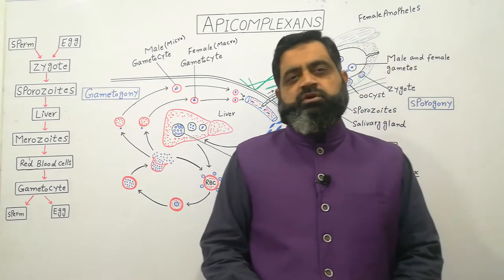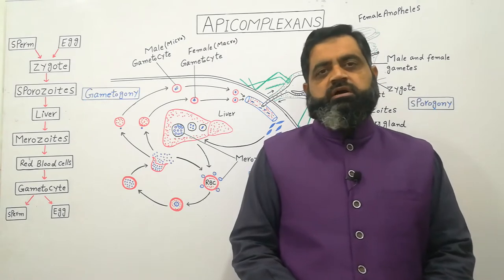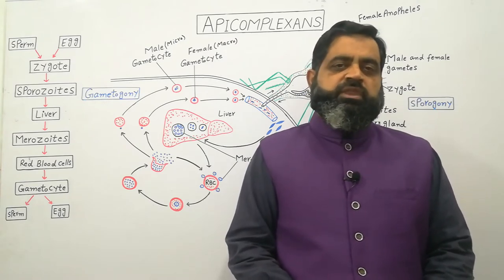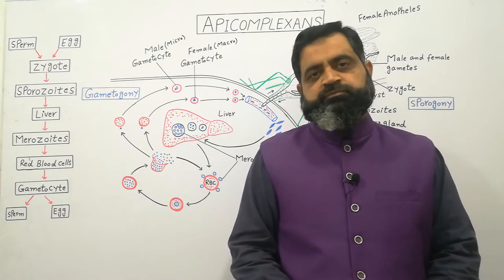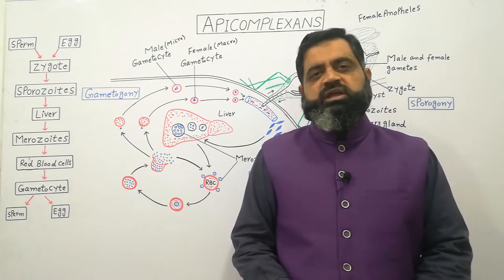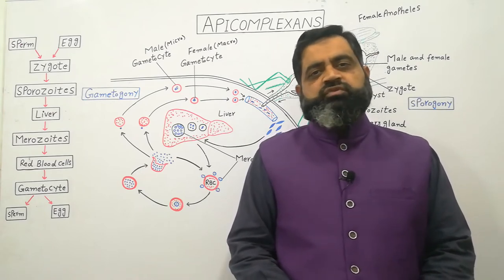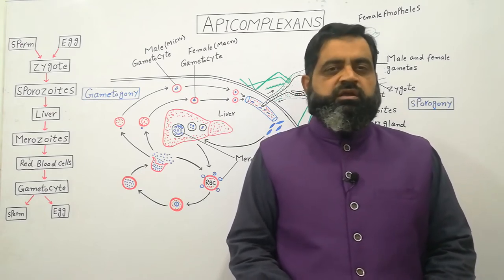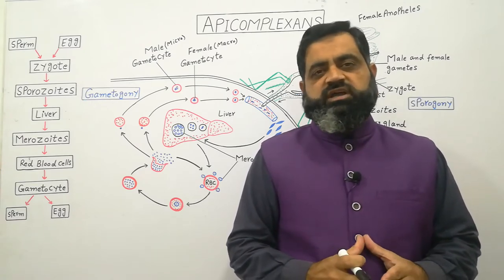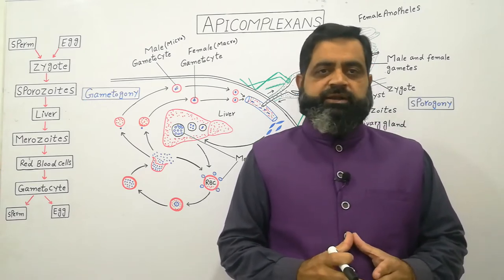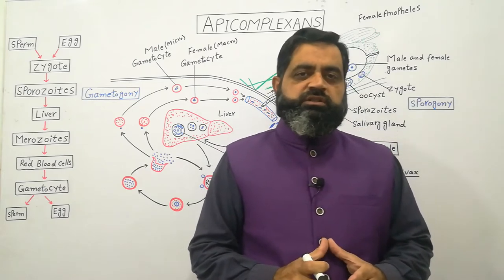Apicomplexa belong to Kingdom Protoctista. They are protozoans and they belong to a group known as Sporosi. Apicomplexa do not have cilia or flagella on their body, but they move with the help of flexing — meaning they move with the help of some body fluid like saliva or blood. They do not have any locomotory organ; they are unicellular.